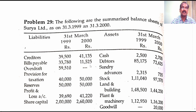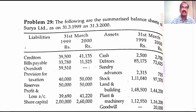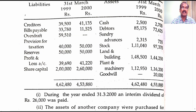What about the overdraft? Overdraft was 59,510 in the beginning of the year, that means in the last year. During the current year it is nil, so therefore it has come down to nil. Decrease in the current liability leads to increase in working capital. Provision for taxation — we will open a ledger account. Reserves — there is no change in the reserves.